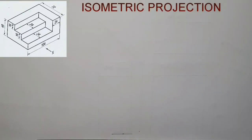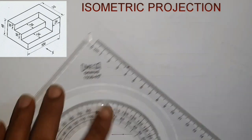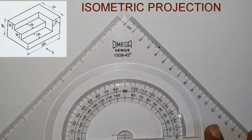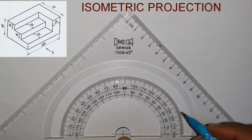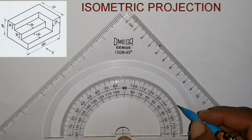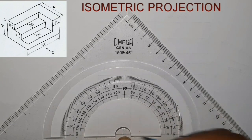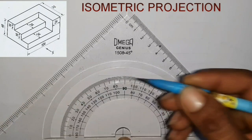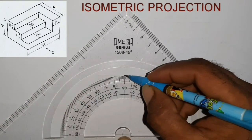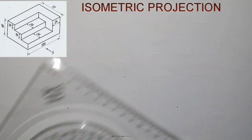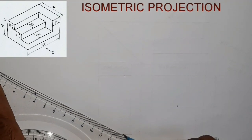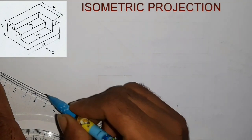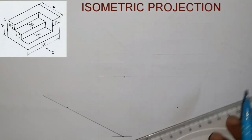Hi friends. We are going to do the first thing about isometric projection. We are going to create a red point at 30 degrees and create the 30-degree line points.